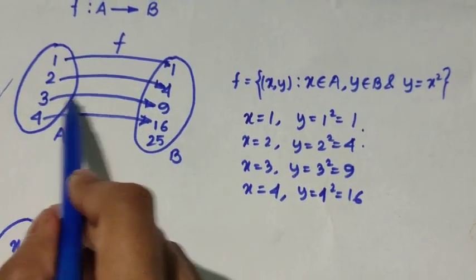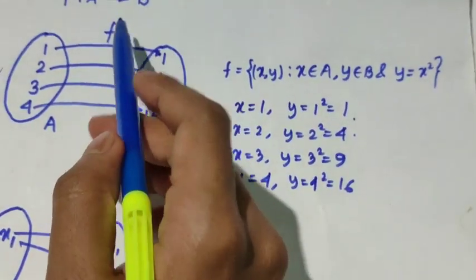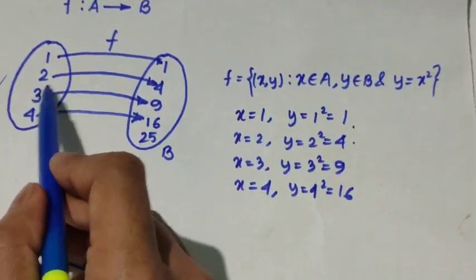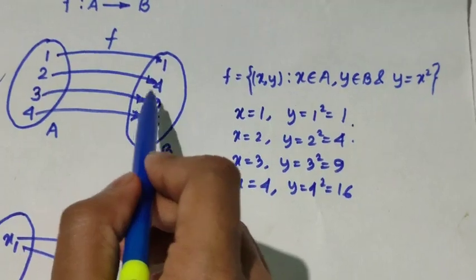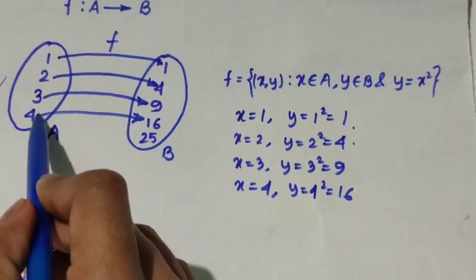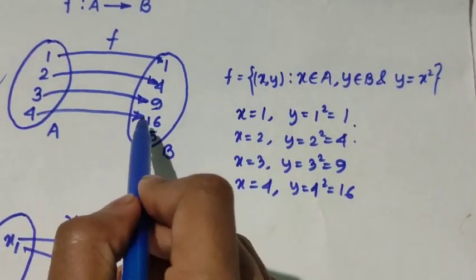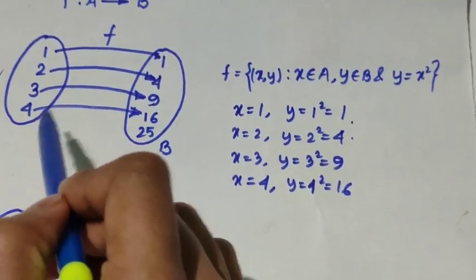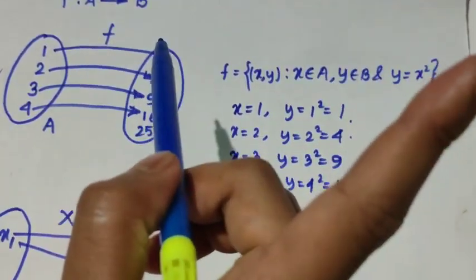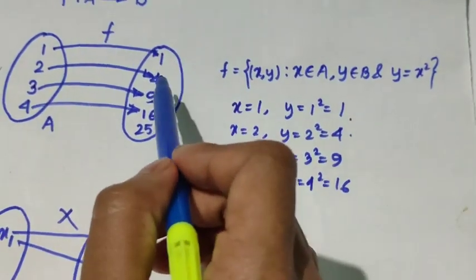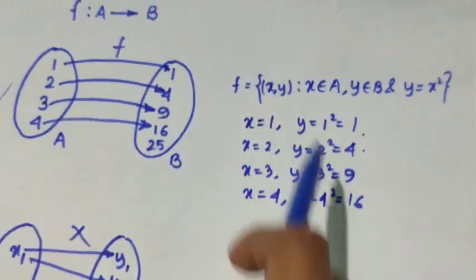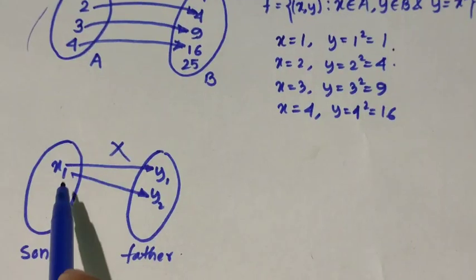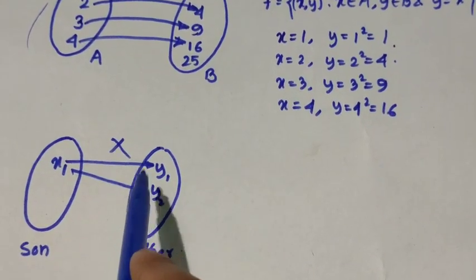An important thing to note is that a function is sometimes called a mapping. You can map 3 to 9, and for x = 4 you can map it to 16. So you can see that for each element in A we have only one unique image in B — this is called a function.